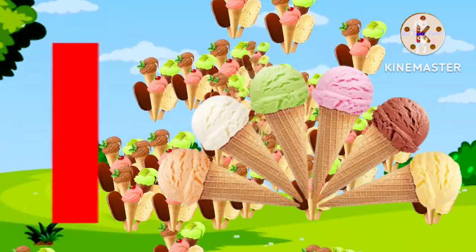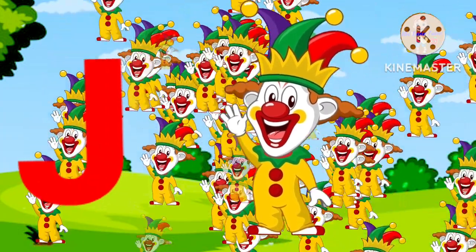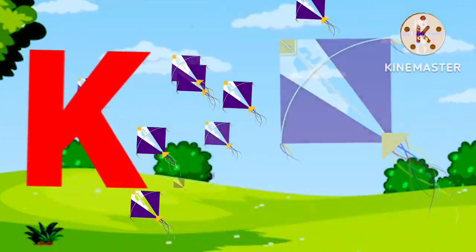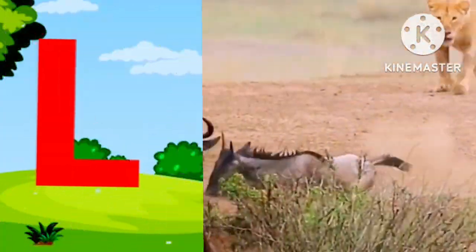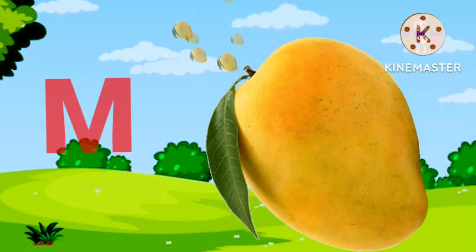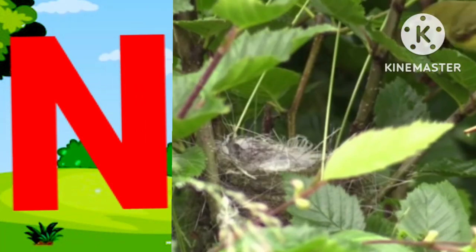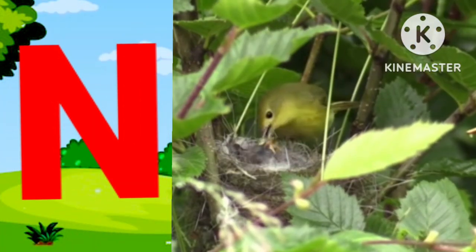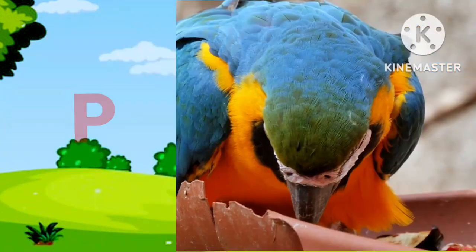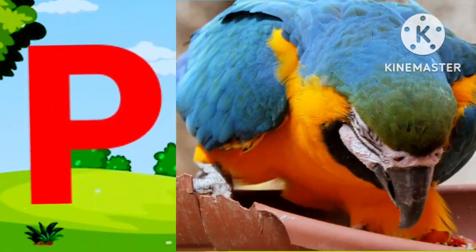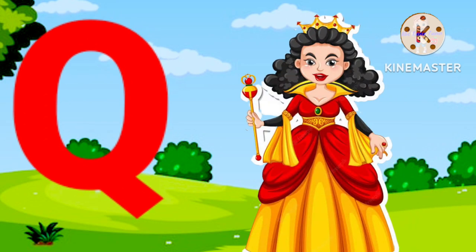I for ice cream, J for joker, K for kite, L for lion, M for mango, N for nest, O for orange, P for parrot.